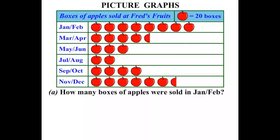In Part A, how many boxes of apples were sold in January-February? Well, in January-February, looking at our key, each apple is worth 20 boxes. Counting up: 20, 40, 60, 80, 100, 120, 140, 160. So we've got 160 boxes there in the Jan-Feb period.